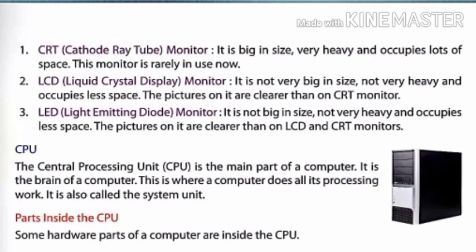The next is CPU. CPU is a processing device — the central processing unit. CPU is the main part of the computer. It is the brain of the computer. This is where the CPU does all its processing work. It is called the system unit.